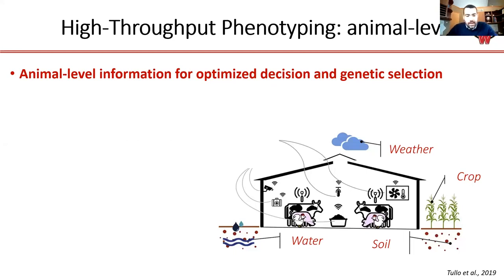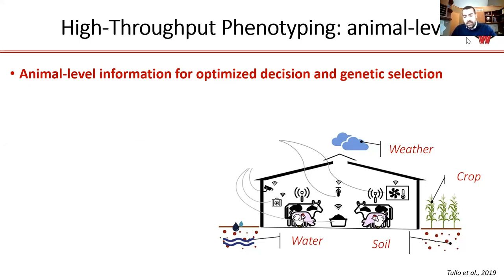I will briefly introduce why we are doing this — why we are using computer vision and collecting animal-level phenotypes. The majority of the work we are doing is trying to develop ways to have high-throughput phenotyping systems, thinking about animal-level information. By having detailed information about the animal, we can have optimized farm decisions about health, nutrition, reproduction, and genetics.